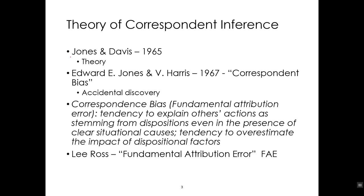A little bit of the timeline about how things were going. In 1965, Jones and Davis developed the theory of correspondent inferences. Then, three years later, Jones and one of his graduate students, Victor Harris, were conducting an experiment to test predictions of their theory. The tests didn't work out, but what they found was something that they called the correspondent bias — an accidental discovery.